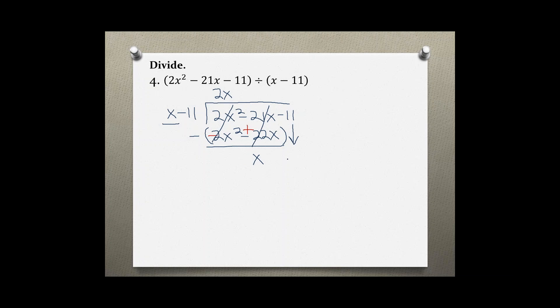Bring down the next remaining term which is negative 11 and ask yourself again by what do I have to multiply x to get x? That would be a 1 because 1 times x gives us x and 1 times negative 11 gives us negative 11.